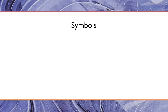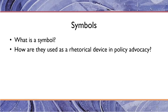Now let's talk about symbols. A symbol is something that stands for something else — and how are they used as a rhetorical device in policy advocacy? Symbols you might think about are things like the flag, or more abstractly the Constitution — standing for America. An eagle might stand for America, or to another person, the eagle might stand for a clean environment. Eagles were threatened several years ago with pesticides and other threats to their habitat and populations. So an eagle might mean different things to different people.